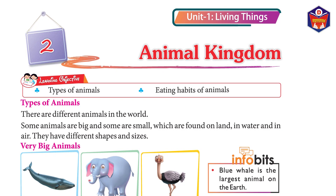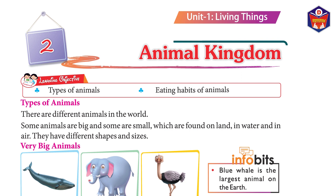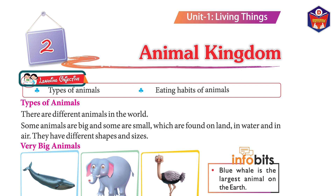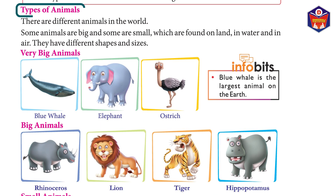Unit 1: Living Things, Chapter 2: Animal Kingdom. Learning objectives: types of animals, eating habits of animals.